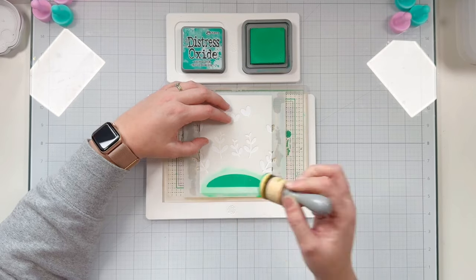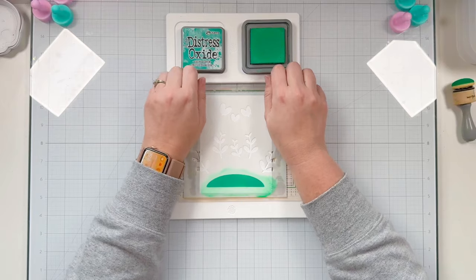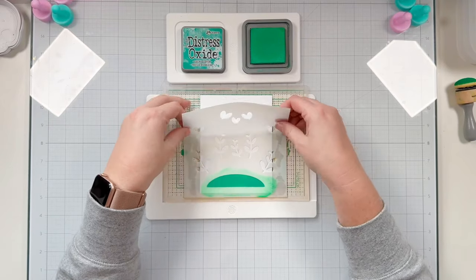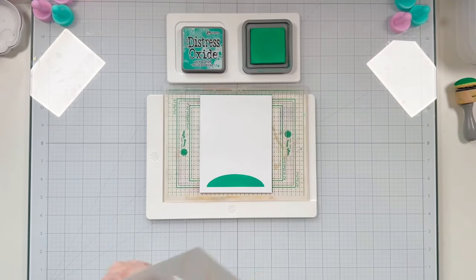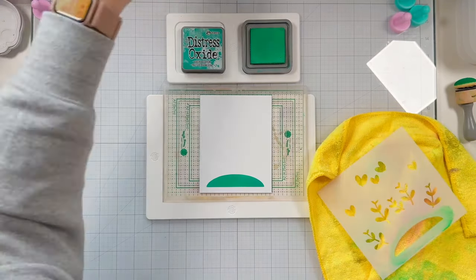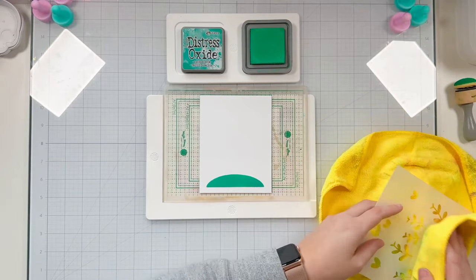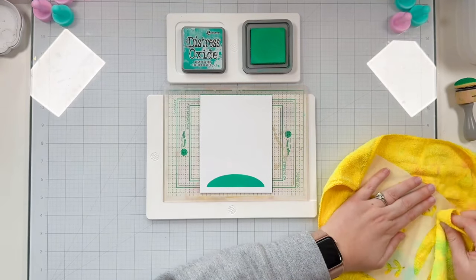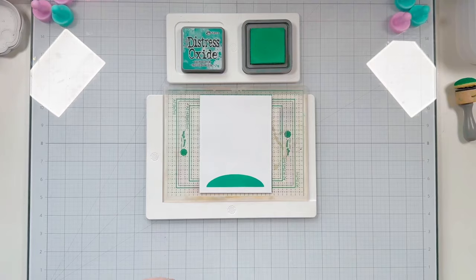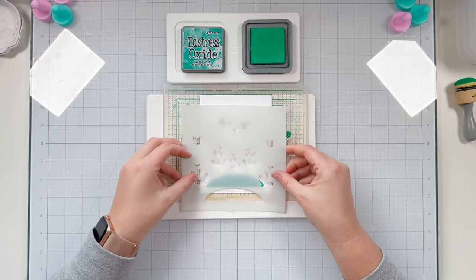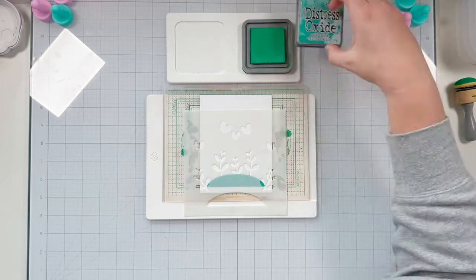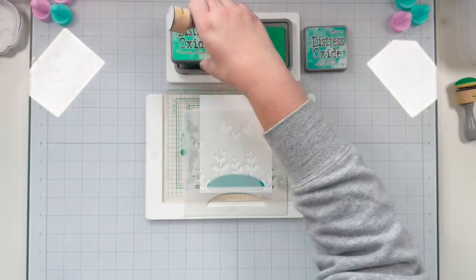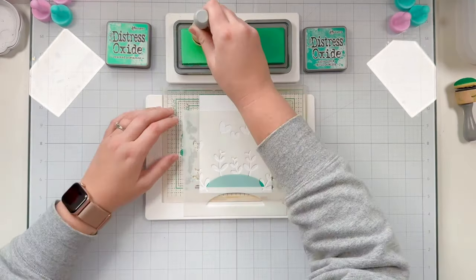I like that it's technically a layering stencil but it's all on one so you can just clean off each section as you use it and continue on with the same stencil. I have a microfiber cloth and I'm using a spray water bottle to add water and clean off my stencil, making sure it's dry since I am using Distress Oxides.